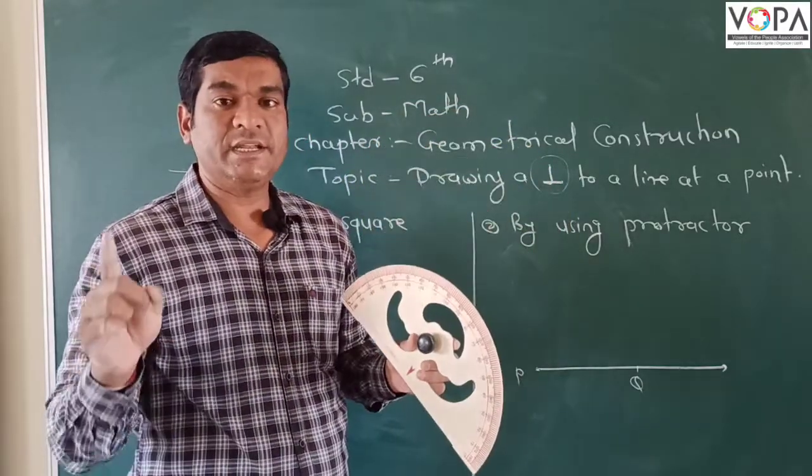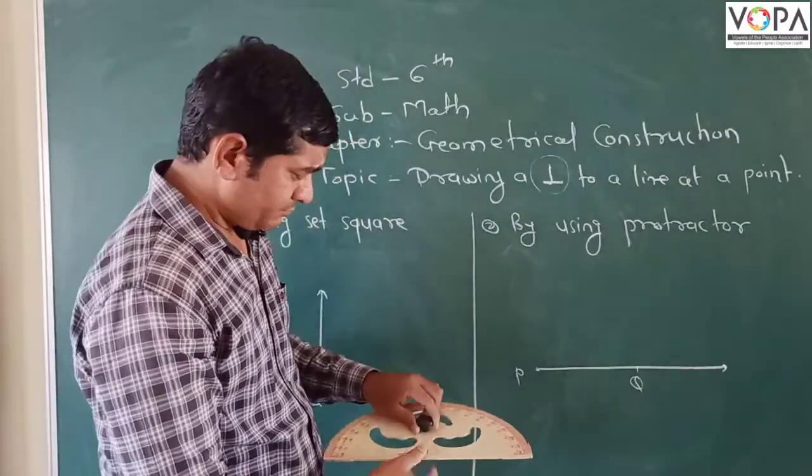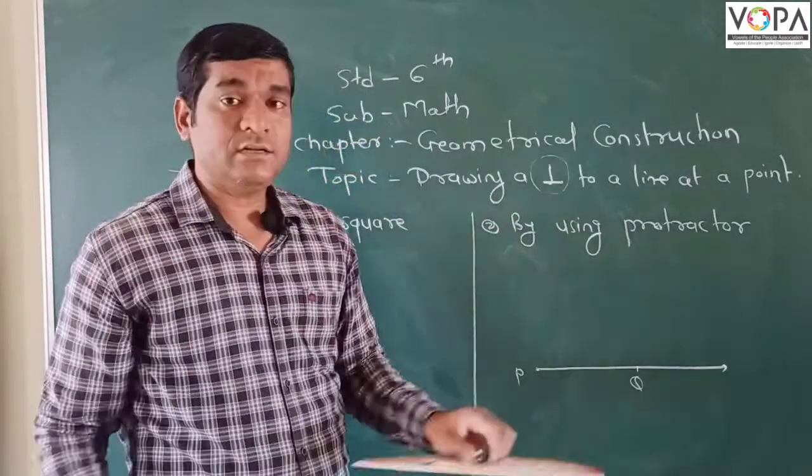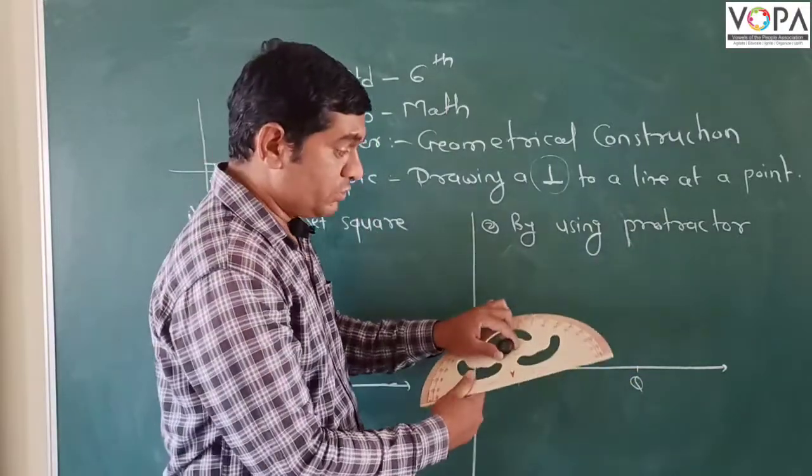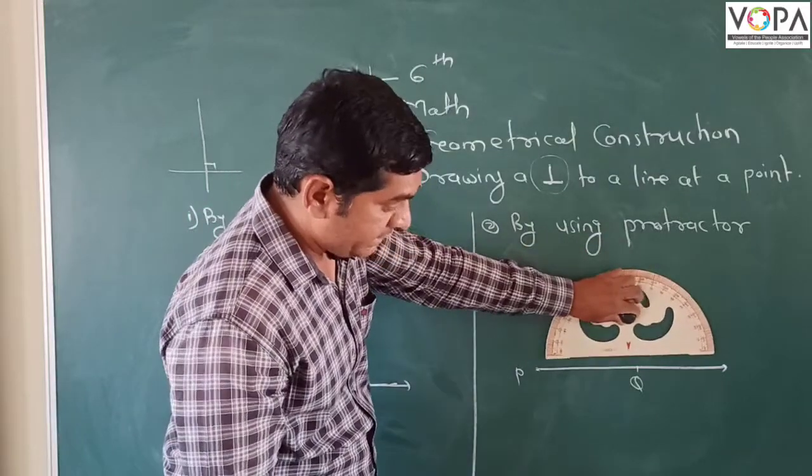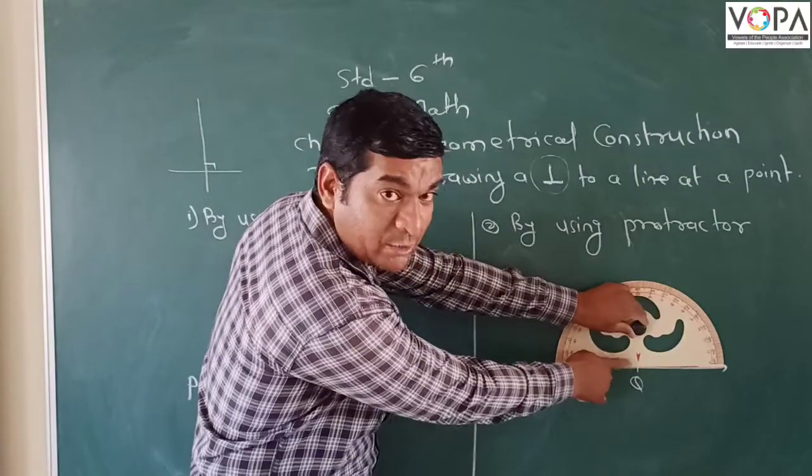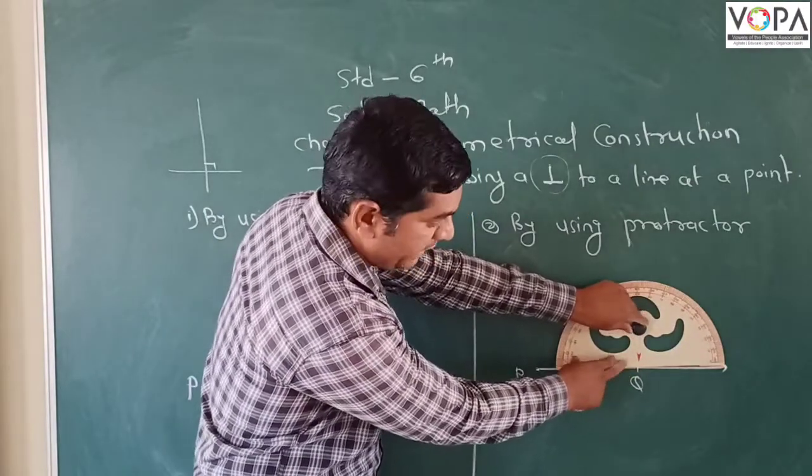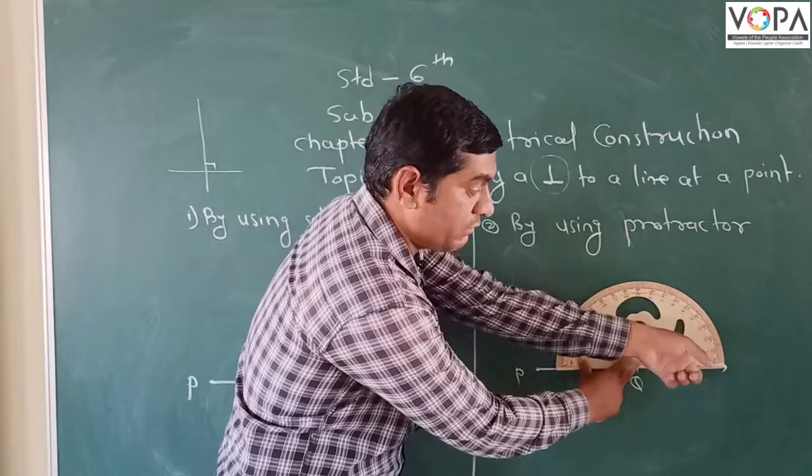So we want to make the angle of 90 degrees by using protractor. Right now PQ is the line given and from point Q we want to draw the perpendicular. So how should we make the perpendicular? Place the protractor at point Q. This center arrow will be on point Q and calculate 90 degrees from this side, or from this side.